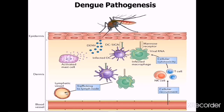During viremia, the virus travels throughout the body. Virus-infected macrophages release signaling proteins such as interferons, cytokines, chemokines, and tumor necrosis factor, which are responsible for many symptoms. This can affect the hemostatic system and infect bone marrow so that it cannot produce sufficient platelets. The incubation period of this infection is 2–7 days.